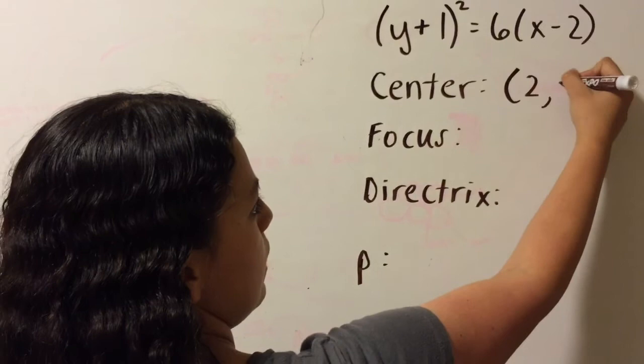Once you have the standard form, you can find the center, focus, and directrix as we did before by finding the p-value.